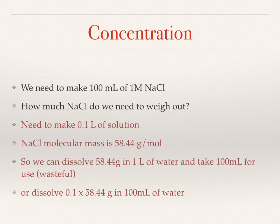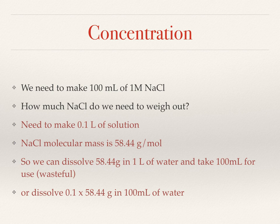We need to make 100 millilitres of one molar sodium chloride solution. How much sodium chloride do we need? One molar solution is one mole per litre, and 100 millilitres is 0.1 litre. From the periodic table the molar mass of sodium chloride is 58.44 grams. We could dissolve 58.44 grams in one litre and take 100 mL, but that's wasteful. Instead, take 0.1 × 58.44 grams and dissolve in 100 mL of water — the ratio is the same, so we have a one molar solution.